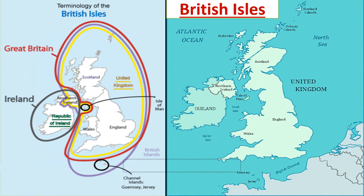Countries such as Armenia, Azerbaijan, Cyprus, Georgia, Turkey, and Russia are known as Eurasian countries.